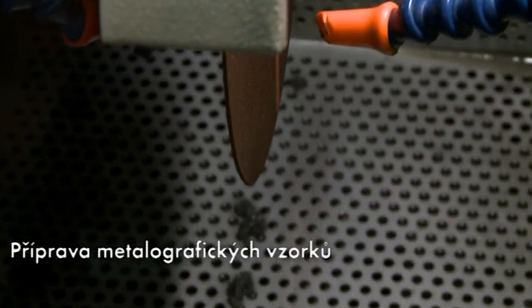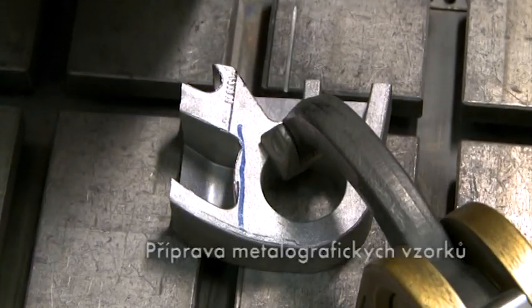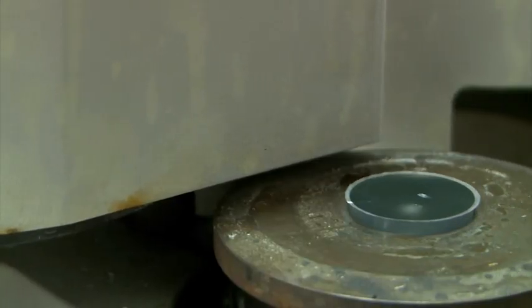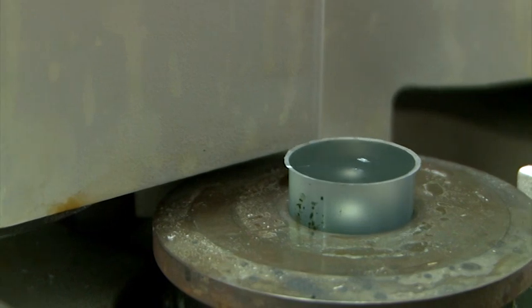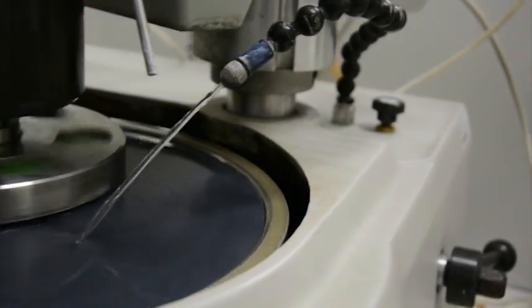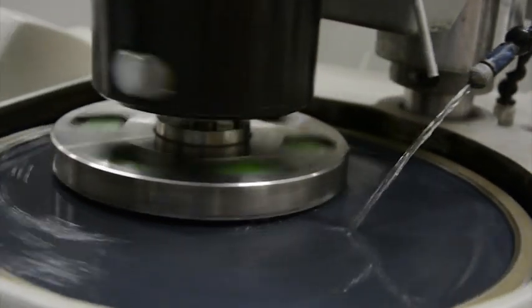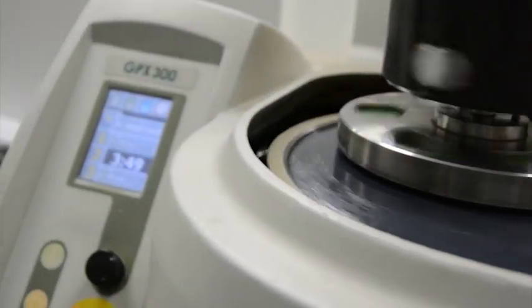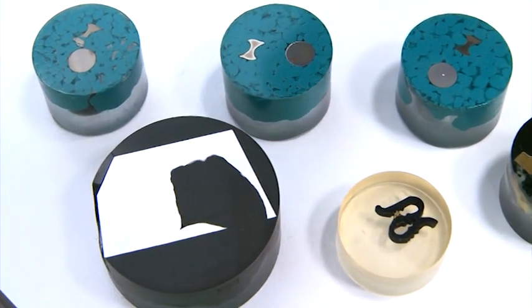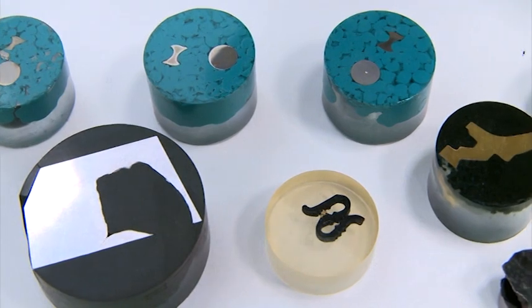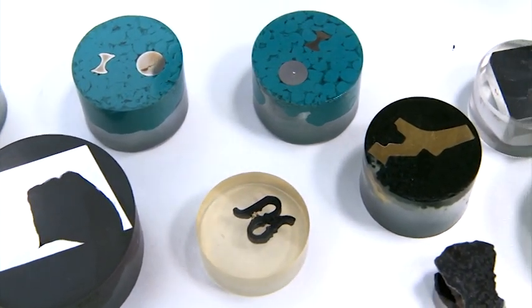Laboratoř přípravy metalografických vzorků poskytuje nezbytnou podporu pro všechny analytické a mikroskopické metody. Zde se čistí vzorky pro pozorování lomových ploch nebo provozních povrchů a také připravují metalografické vzorky v zrcadlovém lesku, které se následně leptají pro vyvolání mikrostruktury.